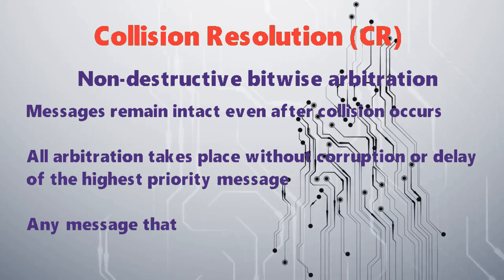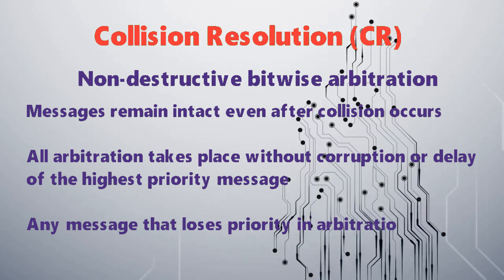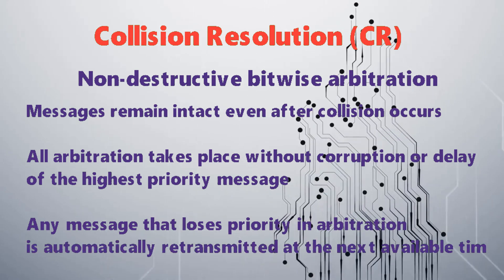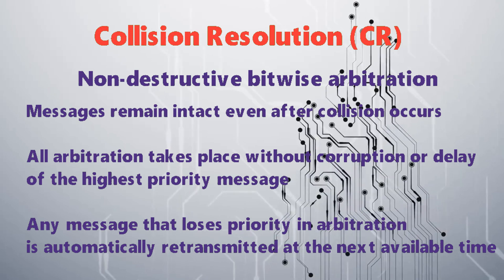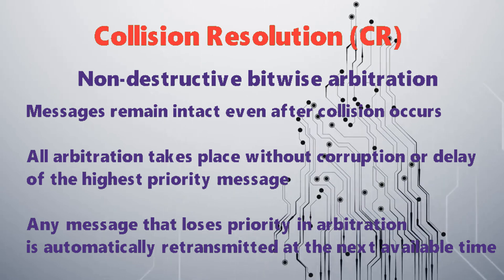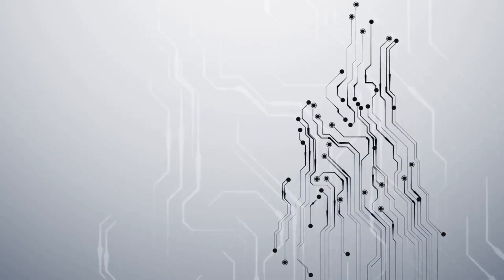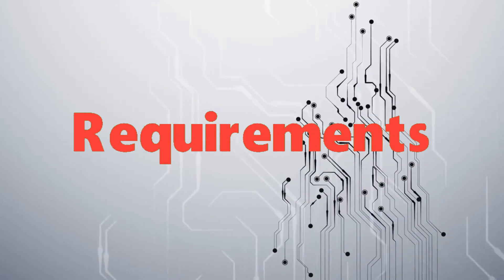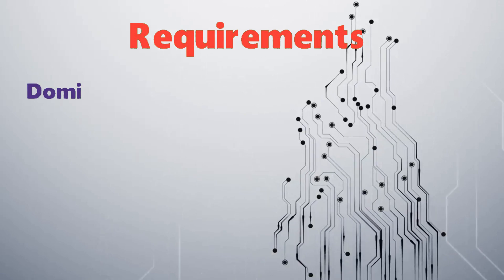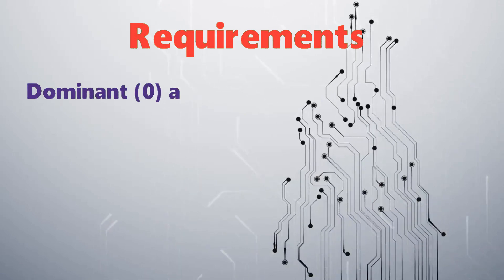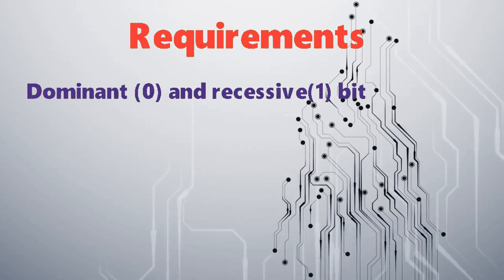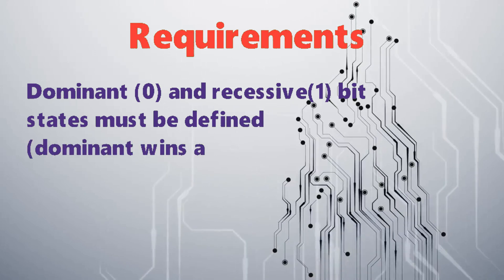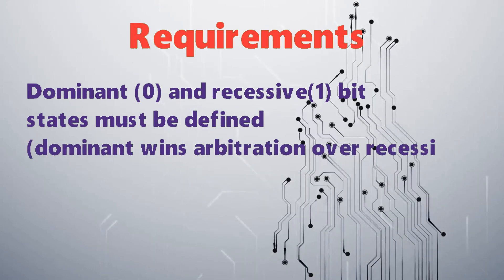Any message that loses priority in arbitration is automatically transmitted at the next available time. Dominant 0 and recessive 1 are the two bit states that must be defined — dominant wins arbitration over recessive. Each node monitors the bus to see if what was sent actually appears on the bus.